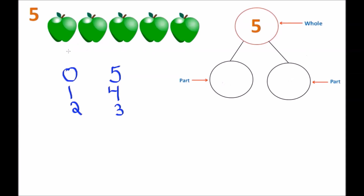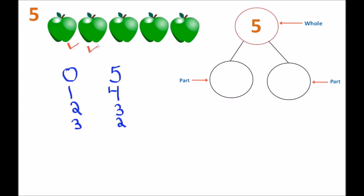We're up to three number bonds now. Let's go back to the apples and do one, two, and three. Now we have three apples, so let's write the number three. Let's see how many are remaining — one and two — so let's write the number two. Now we have a three and a two. Before we had a two and a three, but now three is on the left side and two is on the right side. That's a separate number bond that also makes up the number five.